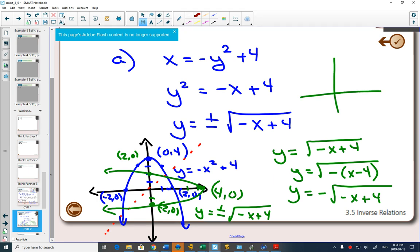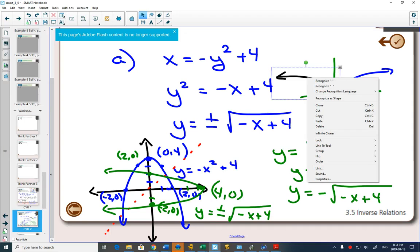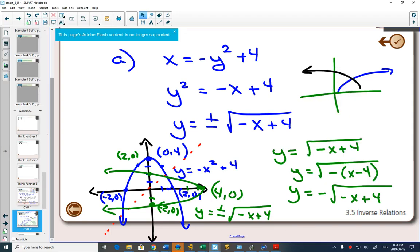OK. There's my square root graph. If I do a horizontal reflection, it would look like that. And then if I moved it 4 to the right, because it's minus 4 after it's in factored form, 1, 2, 3, 4, can you see that you get the top part of the green graph that we had?